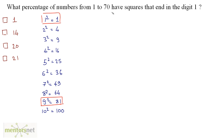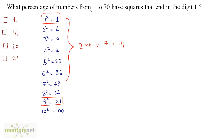From 1 to 70 we have 70 numbers. Dividing them into groups of 10 gives 7 groups, and in each group there are 2 numbers whose squares end with digit 1. So for 7 groups we will have 14 numbers in all. Therefore 14 numbers out of 70 have squares ending with digit 1, and we need to find the percentage, so we multiply the fraction by 100.